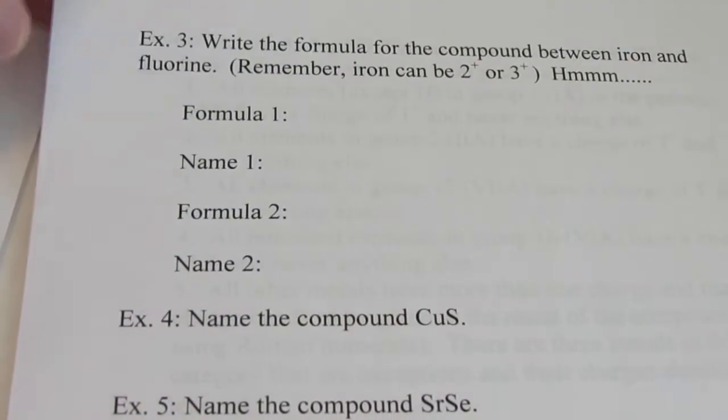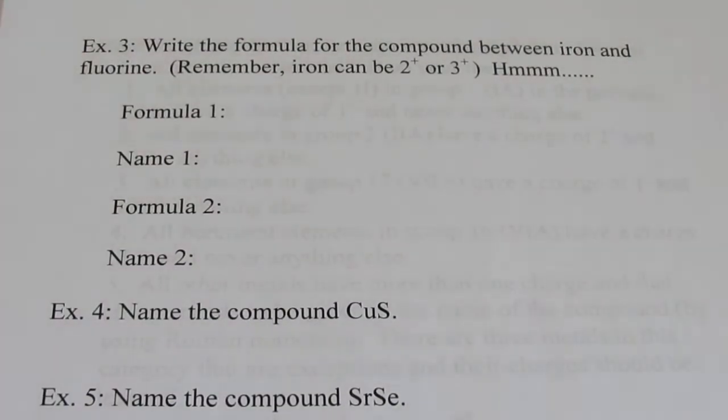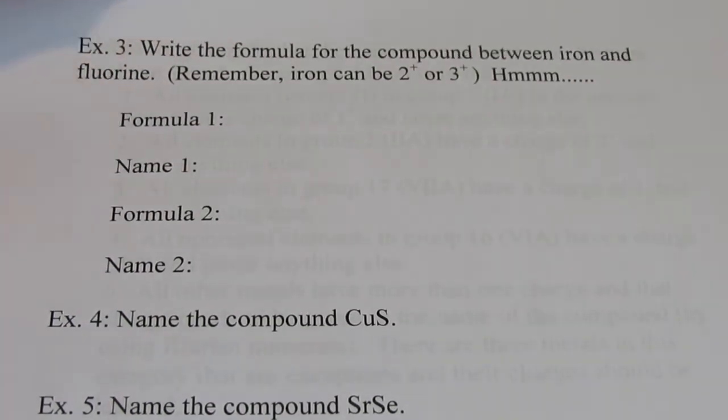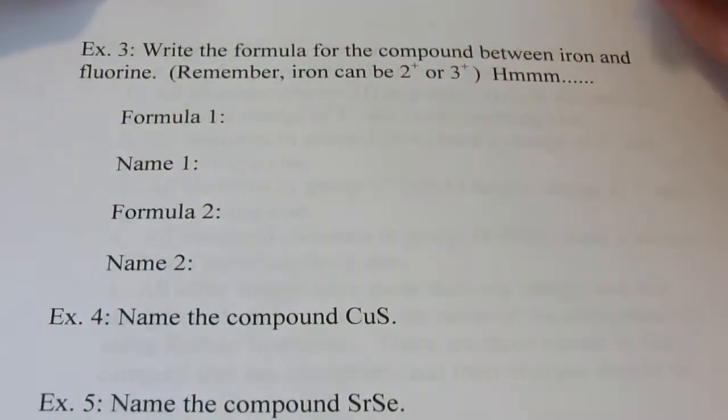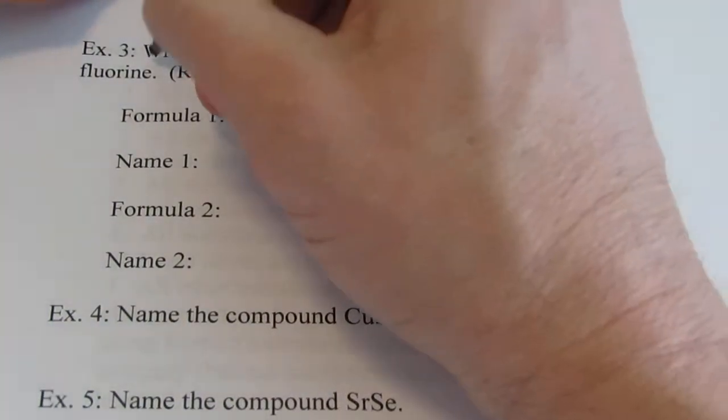And I want to end with number 3. Maybe we'll get to number 4. But number 3 brings up an interesting problem. And this is where kids get caught up. So please pay attention. What if I wanted the formula between iron and fluorine?